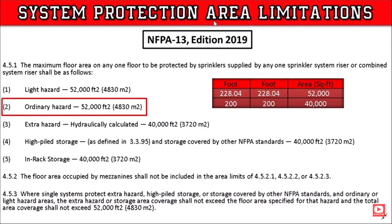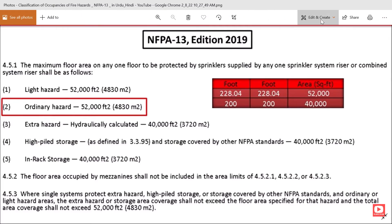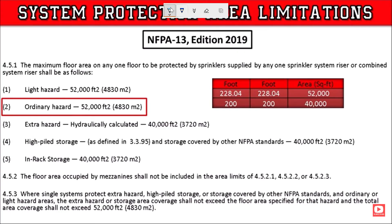System protection area limitation: the system protection area limitation per NFPA 13 edition 2019. The maximum floor area on any one floor to be protected by a sprinkler system supplied by any one sprinkler system riser or combined system riser shall be as follows.